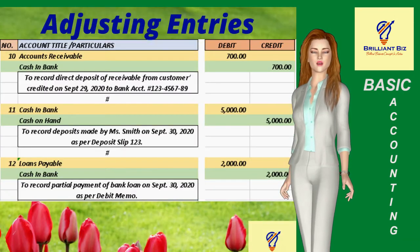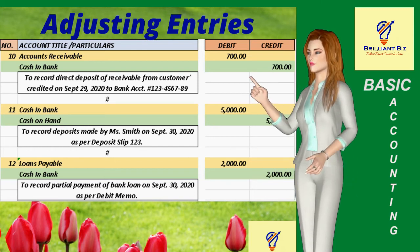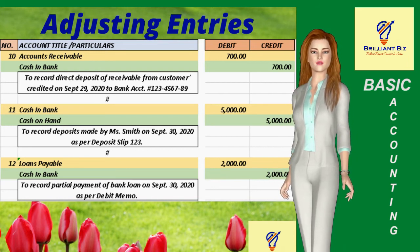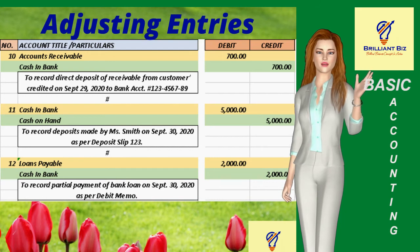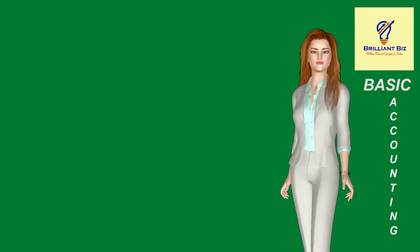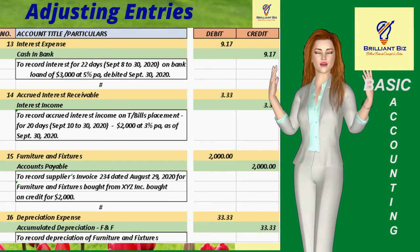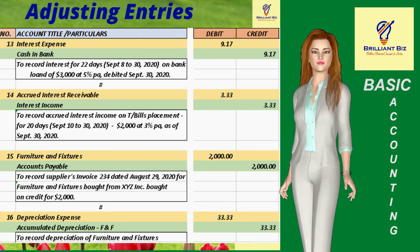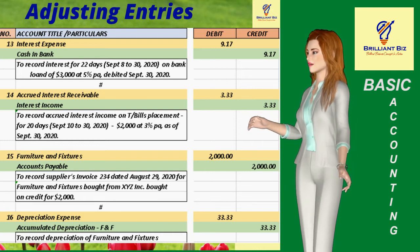Number 6 to record $3,000 proceeds of bank loan with a promissory note dated September 8; number 7 to record $50 bank service charge for loan processing; number 8 to record $2,000 treasury bills placement dated September 10 to earn interest of 3% per annum; number 9 to record $25 cost of one check booklet; number 10 to record September 29 direct deposit of customer's account of $700; and number 11 to record $3.33 accrued interest income on $2,000 treasury bills placement.